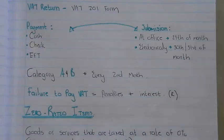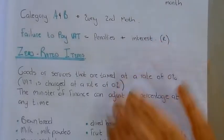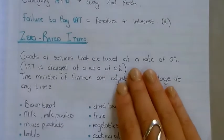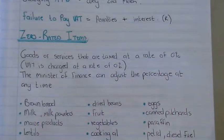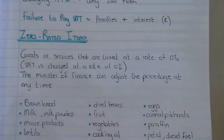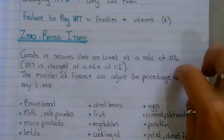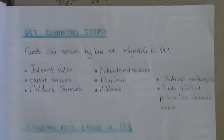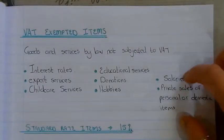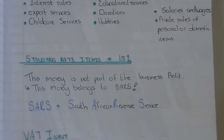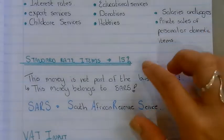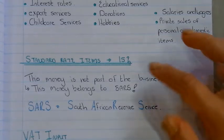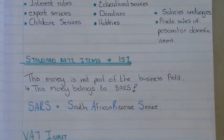There are mainly three types of VAT items. Zero-rated items have a VAT percentage of 0%. VAT-exempt items have no VAT charged on them at all. Standard-rate items have VAT charged at 15%.